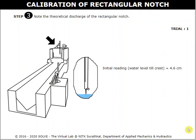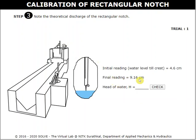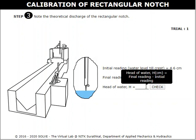Click on the next button. Here, adjust the hook gauge to obtain a head of water over the rectangular notch. Click on the knob to adjust it to change the water level. The difference between the final water level and the initial water level gives the head of the water.